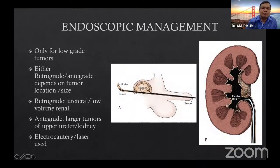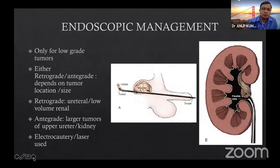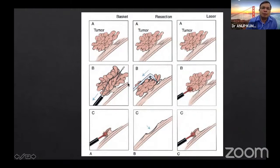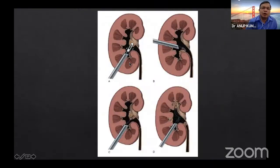Endoscopic management can be done for low-grade tumors either by retrograde flexible ureteroscope for low-volume tumors, or percutaneous technique for larger tumors using cautery or laser. Biopsy can be taken with a basket, cautery resection, or laser — all usable for tumors less than two centimeters. Percutaneous approach carries some risk of tumor seeding along the track, so it is not commonly used today, but you should know the method.